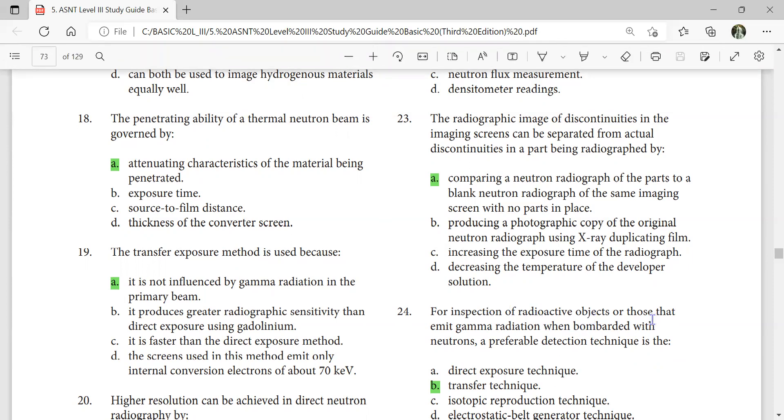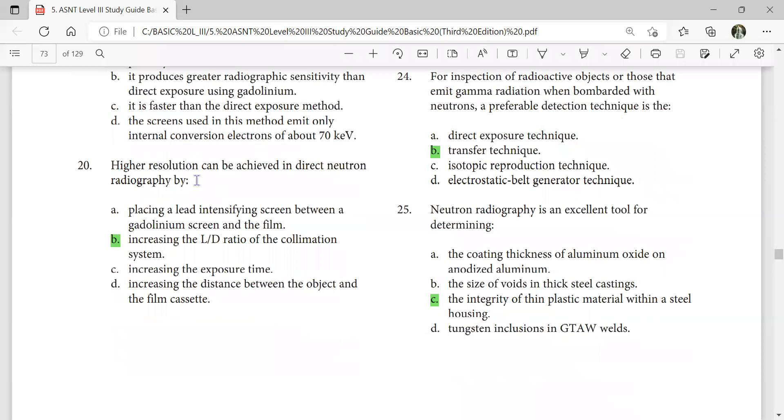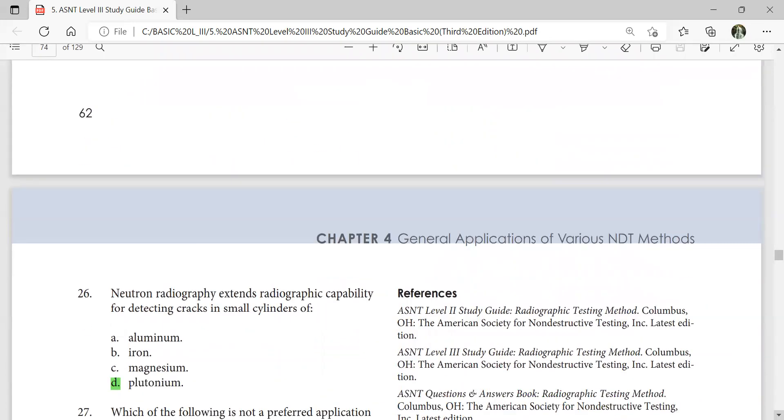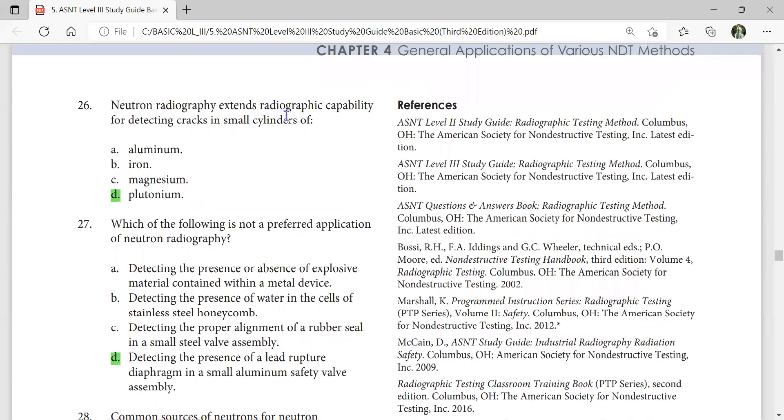For the inspection of radioactive objects or those that emit gamma radiation when bombarded with neutrons, the preferable delay detection technique is transfer technique. Higher resolutions can be achieved in direct neutron radiography by increasing the L/D ratio of the collimator system. Neutron radiography is an excellent tool for determining the integrity of thin plastic material within a steel housing. Neutron radiography extends radiography capability for detecting cracks in small cylinders of plutonium or radioactive materials.